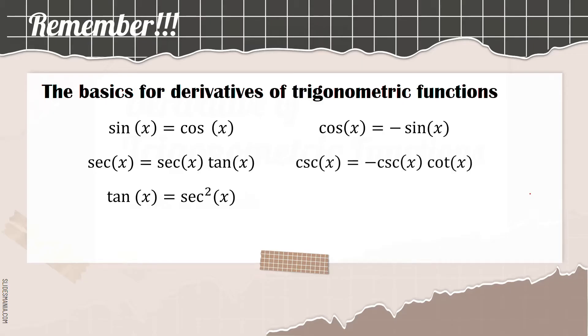The derivative of cosecant of x is equal to negative cosecant of x times cotangent of x. Lastly, the derivative of cotangent of x is equal to negative cosecant squared of x.